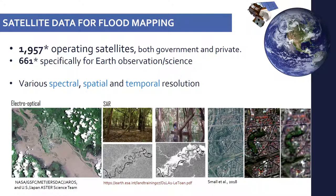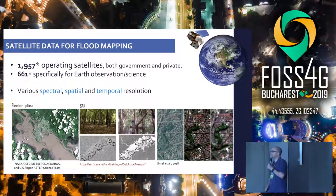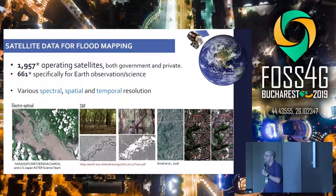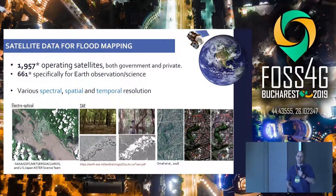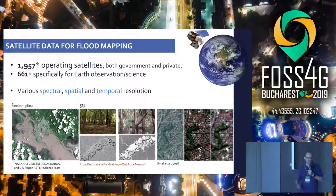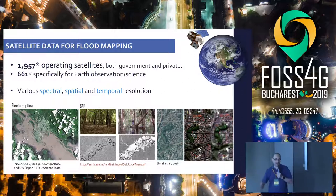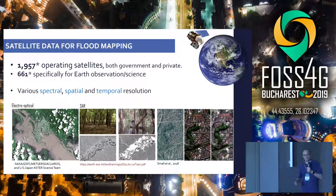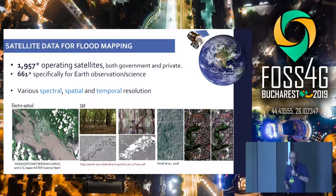On the other hand, there is more and more satellite data, including free satellite data, constantly being collected from every location on Earth. Currently, close to 2,000 satellites orbit Earth, more than 600 designed specifically for Earth observation and science. They collect data in various spectral, spatial, and temporal resolutions, and many sources are publicly available and free. For flood events, we usually use optical imagery and SAR data, which can penetrate cloud coverage. I will show how we use Sentinel-1 and Sentinel-2 together to map flood events in cities.